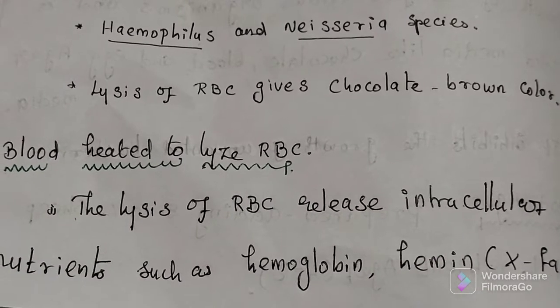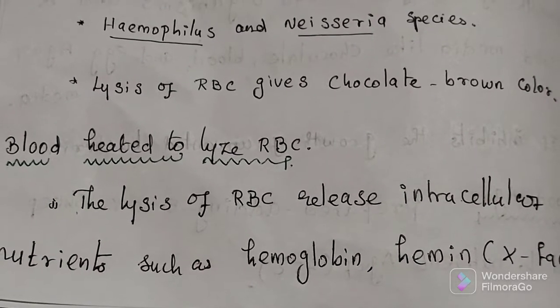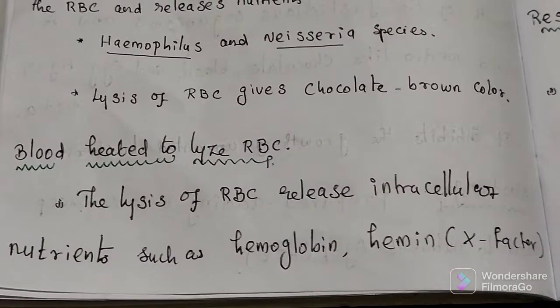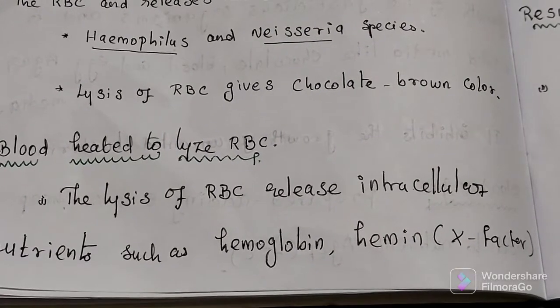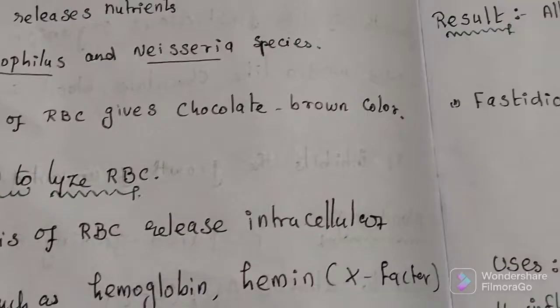Chocolate agar medium uses heated blood only. This one lyses RBC. The lysis of RBC releases intracellular nutrients such as hemoglobin, heme factor X, and coenzyme.